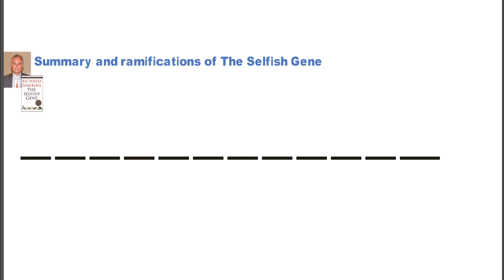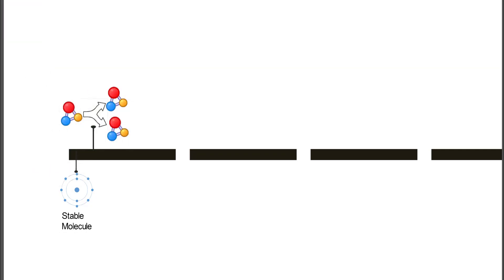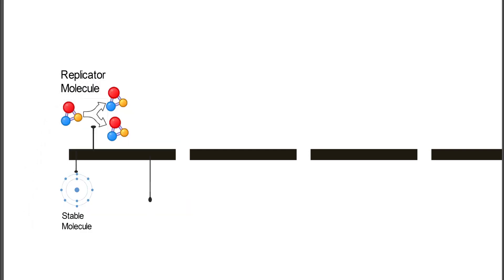Dawkins kind of runs across this in a very linear fashion, so we're going to follow on his approach. He talks about the fact that we had stable molecules and amino acids in the very beginning, and they basically started to form into replicators, replicator molecules.